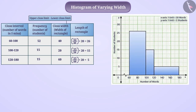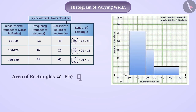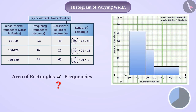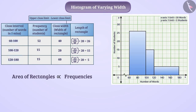Now pause the video and find out whether the area of each rectangle in this histogram is proportional to the frequencies or not. Try it. You should find that now the areas of the rectangles are proportional to the frequencies. Hopefully you can now draw a histogram of varying width for a graded frequency distribution that has different class widths.